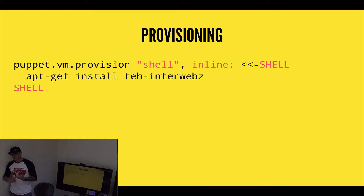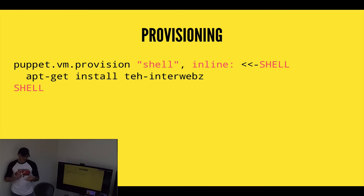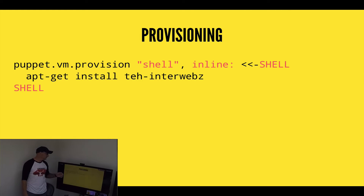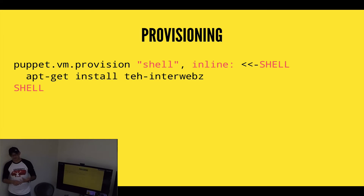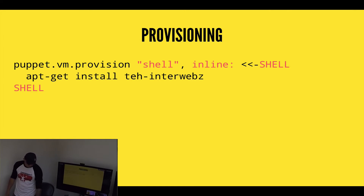Now we're to the provisioning part. Our Vagrant machines are configured — they know how to talk to each other and have networking set up. The provisioning is the part where we actually install and configure Puppet. The provisioning happens between two shell statements and is just the actual bash commands you'd run on a Linux server. For a Windows server you can use PowerShell, or if you want to use Chef, Ansible, Puppet, or any of those, you can also do that.